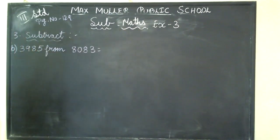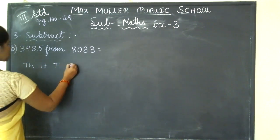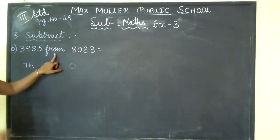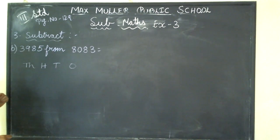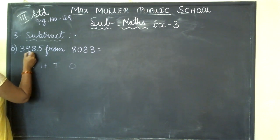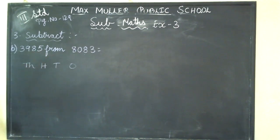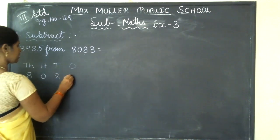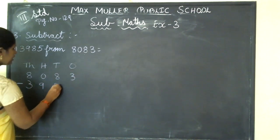First step — we are writing the place values: 1,000, 100, 10, 1. So which number are you going to write first? They have used 'from' — in between these two numbers they have used 'from'. So which number are you going to write first? Which is the bigger number? Compare here — 3,985 and 8,083. So which number will you write first? 8,083 — write down. 8,083 minus 3,985.